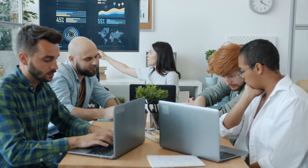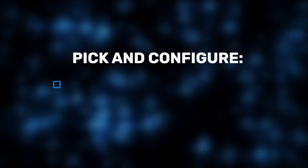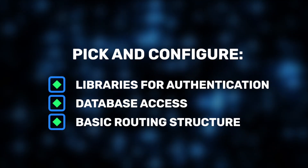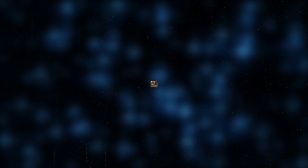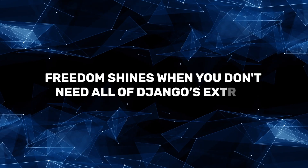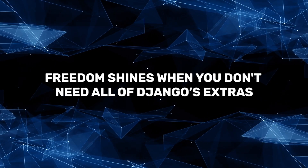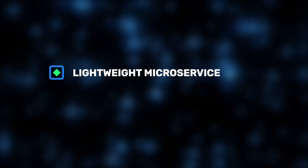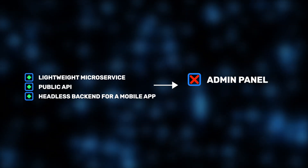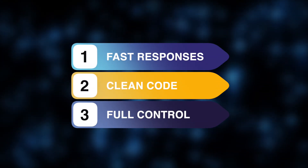Meanwhile, Team B had a bit more setup to do with FastAPI. They needed to pick and configure their libraries for authentication, database access, and even some basic routing structure. It gave them complete freedom, but also meant more setup and planning up front. But that freedom is golden when you don't need all the extras Django throws in — say you're building a lightweight microservice, a public API, or a headless backend for a mobile app. You don't want an admin panel or form engine. You just want fast responses, clean code, and full control. In those cases, FastAPI's build-only-what-you-need approach is exactly what you want.